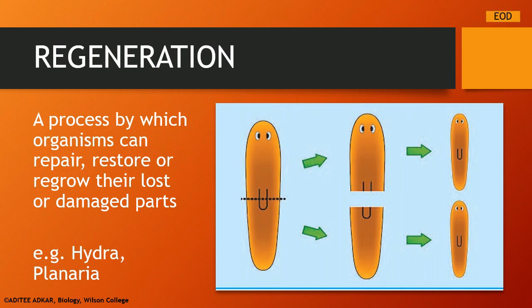Let us understand the process of regeneration. Please note that regeneration is not a kind of reproduction — it is an altogether different process in which an organism can repair, restore, or regrow its damaged or lost parts. This process is seen in many animals like hydra and planaria. In planaria, a pull at the center splits the body into two parts, and each part regenerates the remaining half of the body, forming two different planaria.